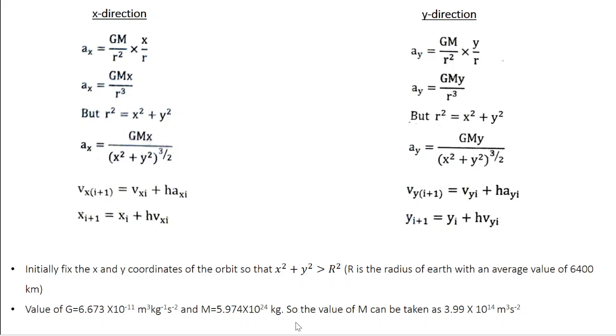So the value of GM can be taken as 3.99×10^14 m³/s². So this should have been GM. Sorry for the typo, let me correct it.